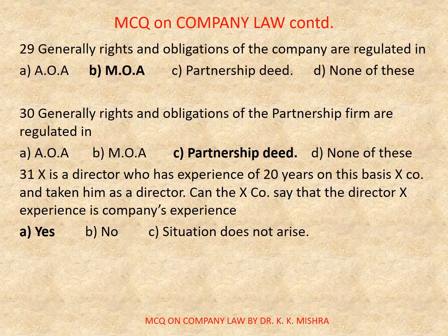Question number 29: Generally, rights and obligations of the company are regulated in? Options are: A) AOA, B) MOA, C) Partnership deed, D) None of these. Correct option is B, MOA — Memorandum of Association.